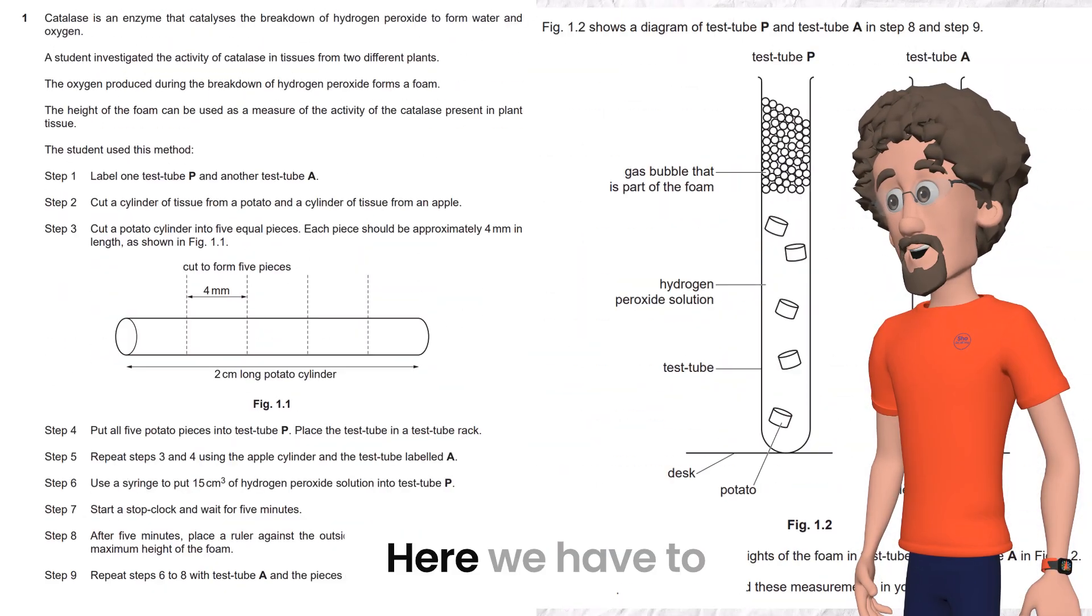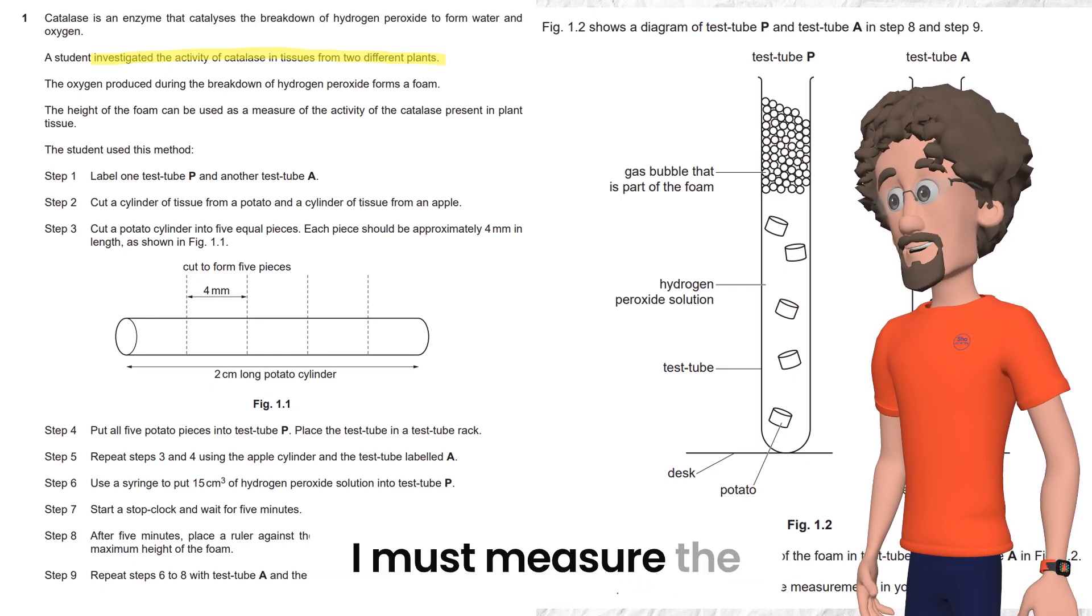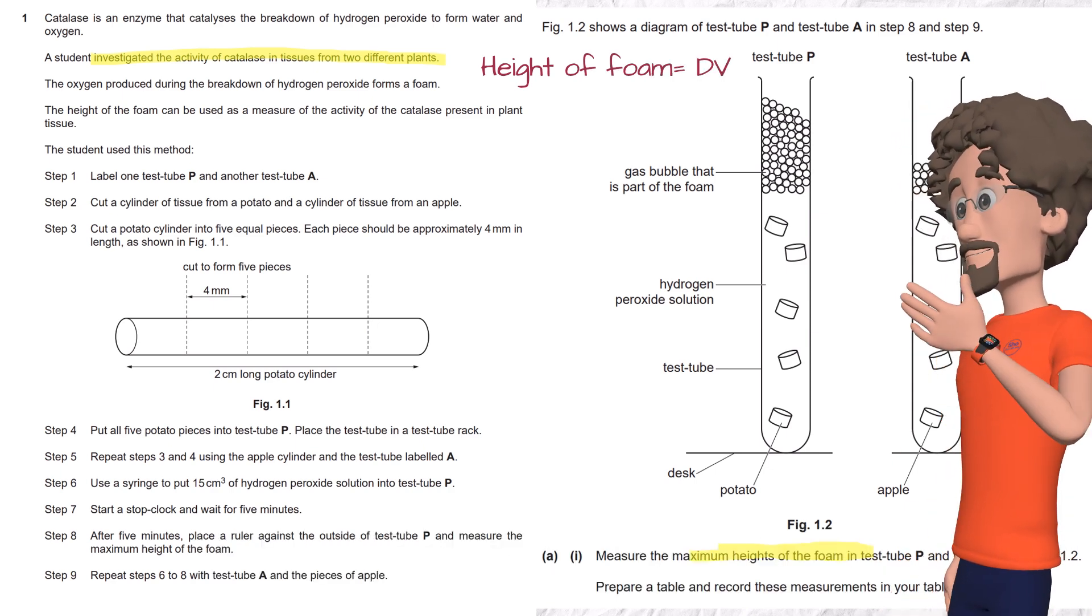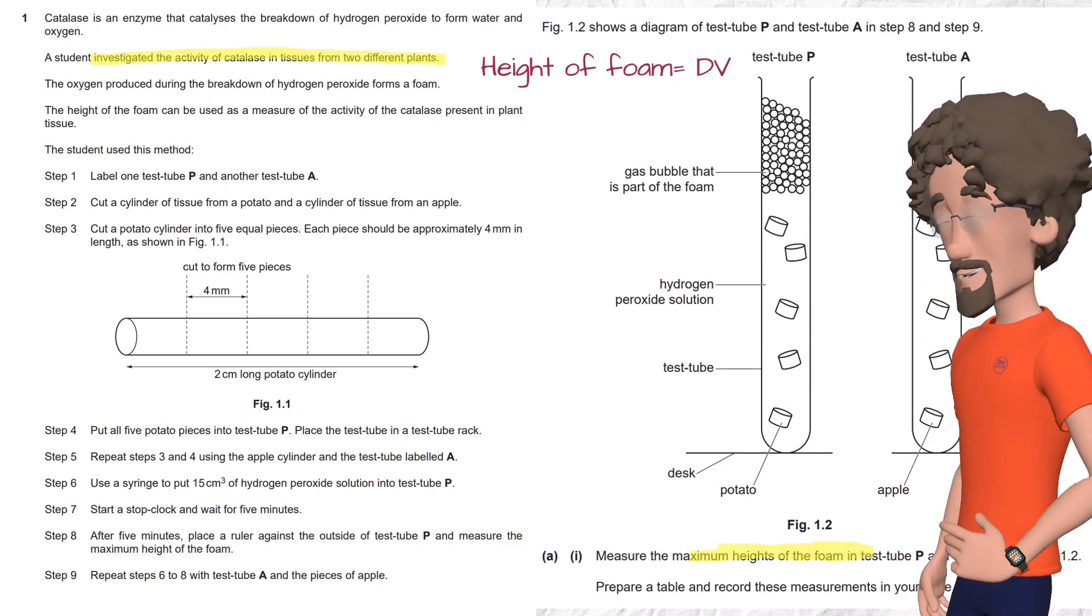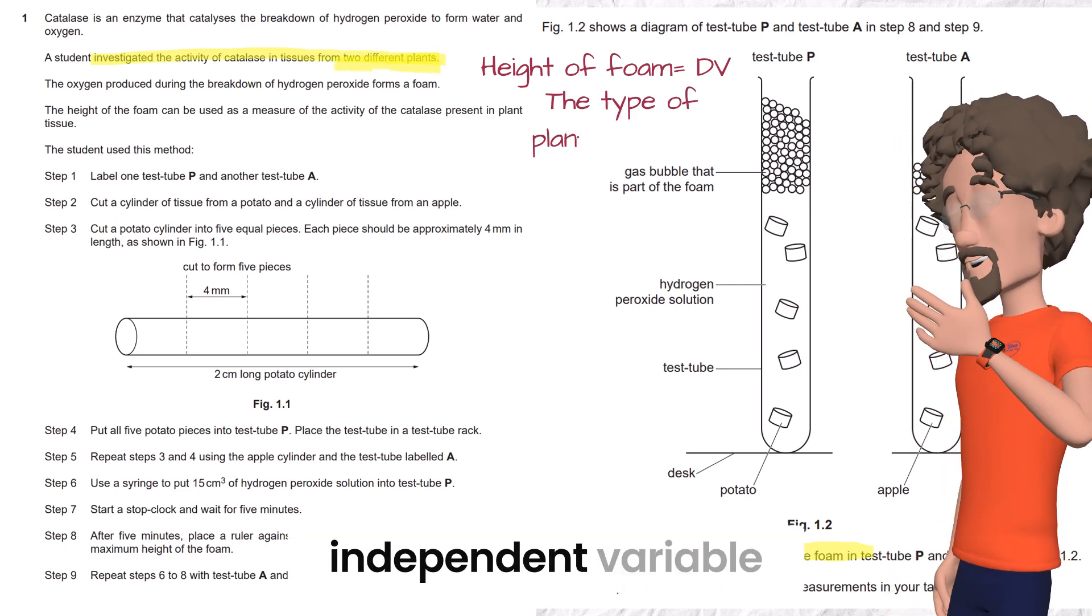Example four: investigate the activity of catalase in tissues from two different plants. Ask yourself what to read. I must measure the height of foam, so that's your dependent variable. What do I feed? We must feed the experiment with different types of plant tissue. So the type of plant tissue is the independent variable.